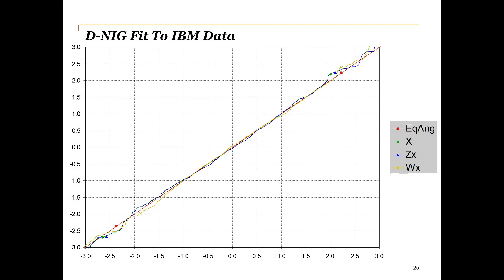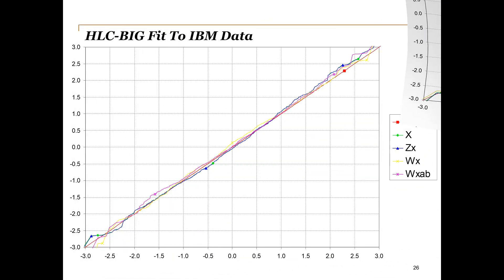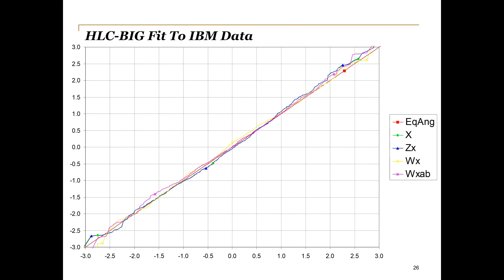Here we see how bringing the normal inverse Gaussian distribution into the daily model leads to a better fit. All lines are closer to the 45-degree benchmark, especially in the tails. The same holds for the high-low close model with underlying Brownian inverse Gaussian process instead of Brownian motion.